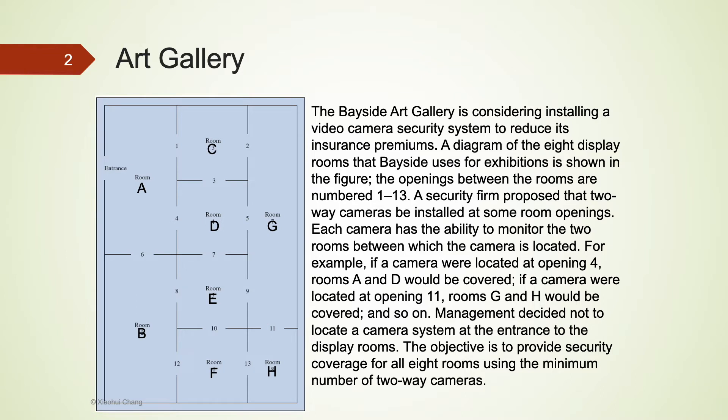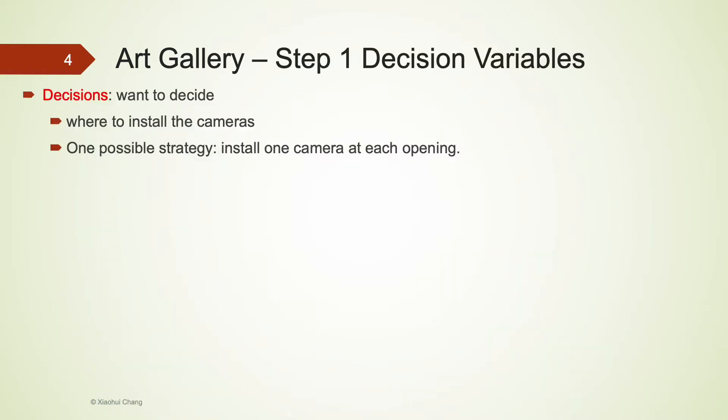How do we formulate this decision-making problem? I have provided some hints by underlining some of the information. Are you able to define the decision variables, state objectives, and state constraints? Let's work on this problem step by step. First, let's begin defining the decision variables.